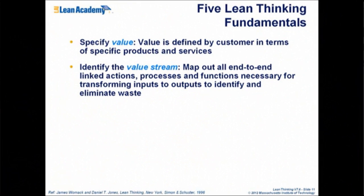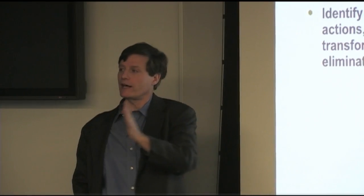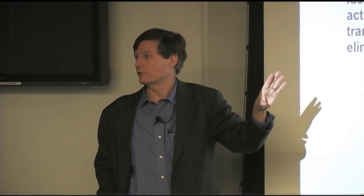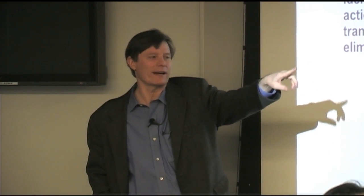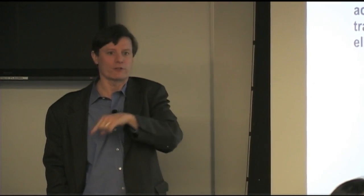Identify the value stream — if we think about the process and take a process map, but a rather specific kind: one that follows the value-added product through the process and thinks about how value is added as it moves through. That's a value stream map. We've identified the value is the hot dog and we're following the hot dog order through there. Not all process maps are value stream maps — we could have followed Sasha around, which would be a process map of that person's work. But a value stream map follows the value-added product.